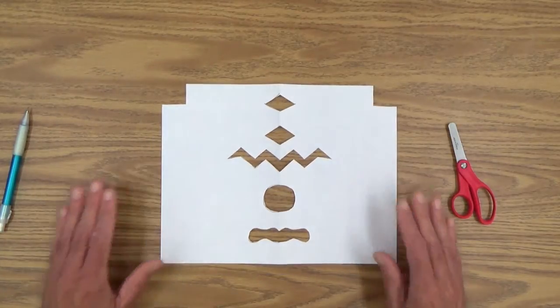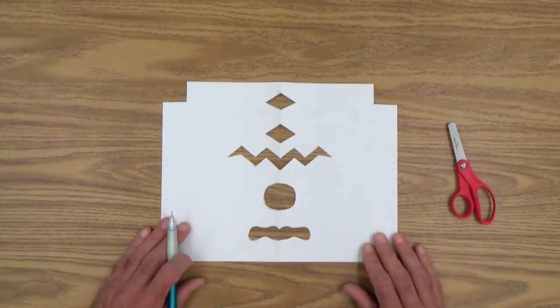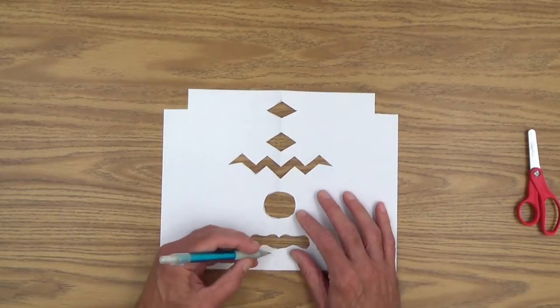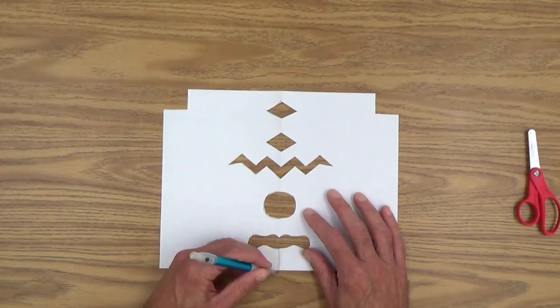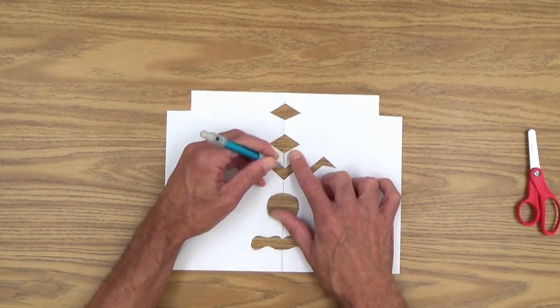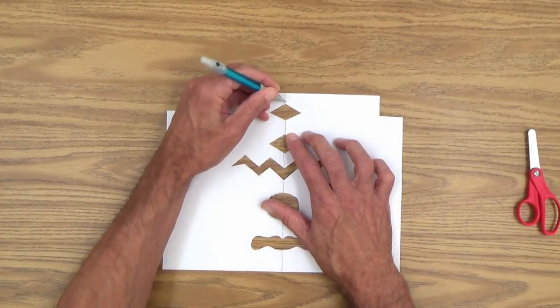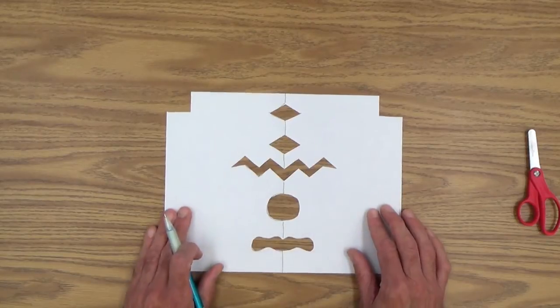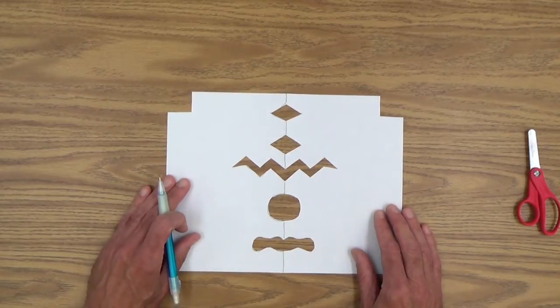To bring the idea of symmetry home, probably, especially early on, you will have to actually draw a line on the fold. Watch what I'm doing. And then you could say to your child, everything on this side of the line is exactly the same as on this side of the line.